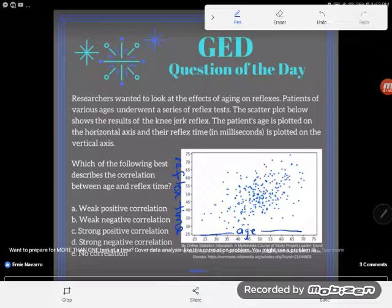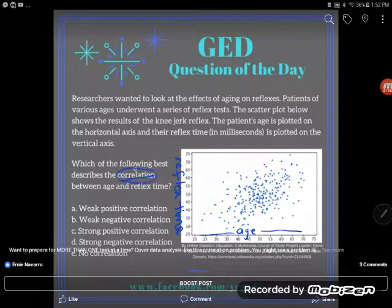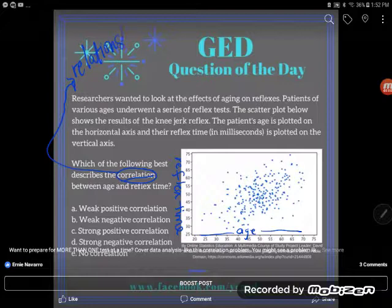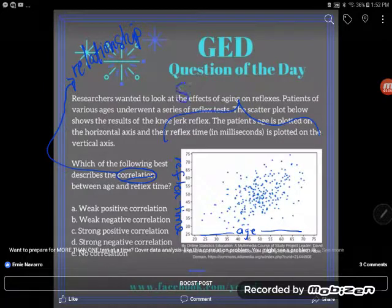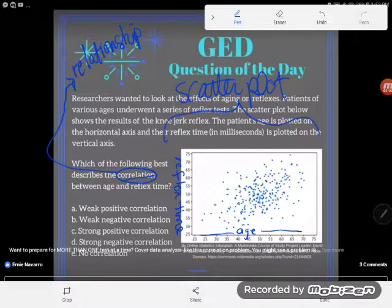Okay, but it says which of the following best describes the correlation between age and reflex time. So remember that correlation is a relationship between the two variables, and a scatter plot, which is what we've been given here, is a great way to look for correlation. Basically you have correlation if you can draw a line of best fit on the graph.